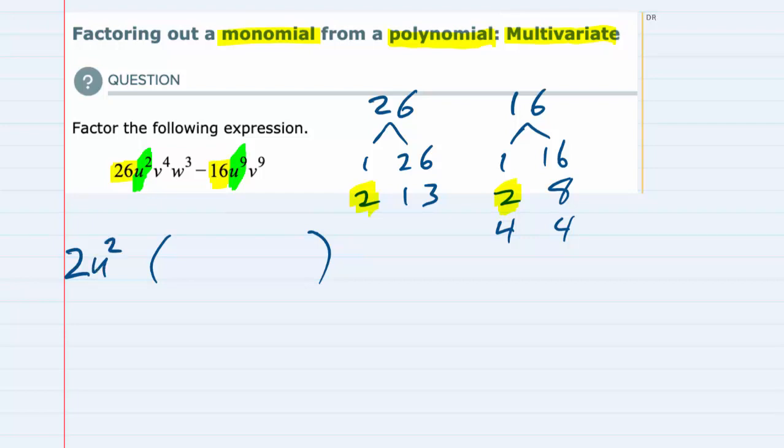Then I noticed that they both also have a v. The first term has a v⁴, the second one has a v⁹, so they both have at least four v's. So I'll factor out a v⁴. The first term has some w's, but the second one doesn't. It's not a common factor, so I'm not going to be able to factor that out.